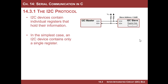Think of an I²C slave as something that has data — you write to or read from a storage element. Everything is stored in what looks like a register. You can model an I²C slave as having a single register or multiple registers. In the simplest case you would just have one register or one field.